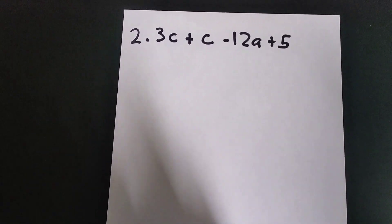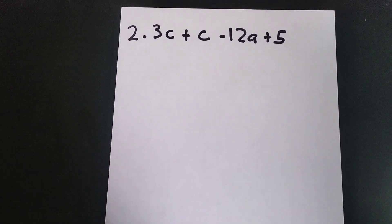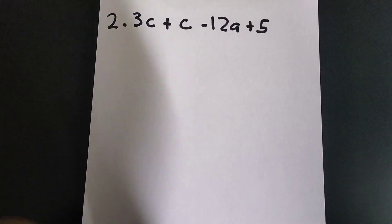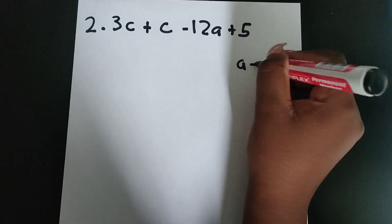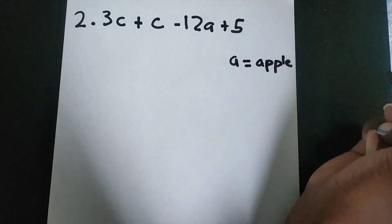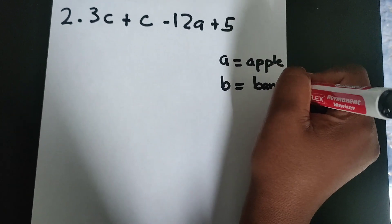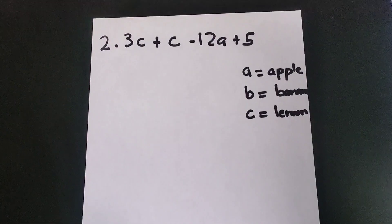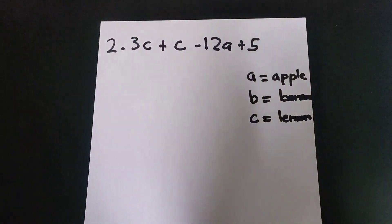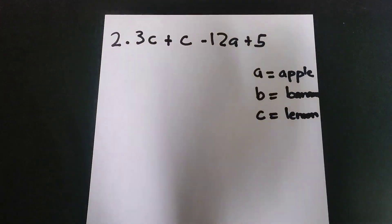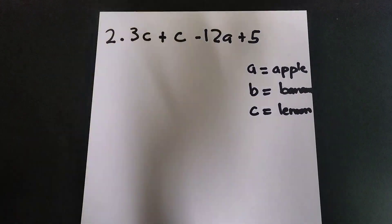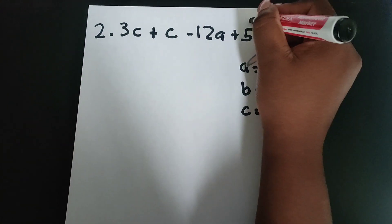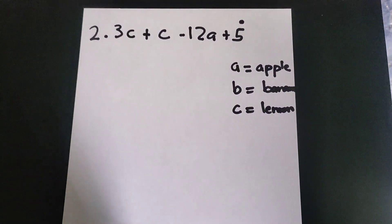Now we're on our second example. Like the previous example, we put our apples, our bananas, our lemons together, and then we add them. So a is our apple, b is our banana — you can use any fruits that you like — and c is our lemon. And then there will be a point whereby a number is just a number without any variable. Just consider that as a lone term because it doesn't have any variables, which in this case is our five. I'll just put a dot, and then you'll see what we're going to do with that five at the end.